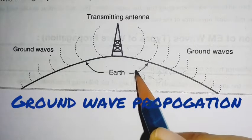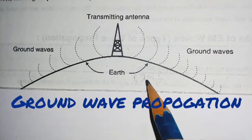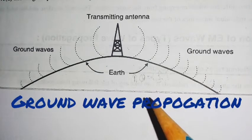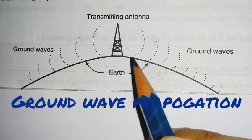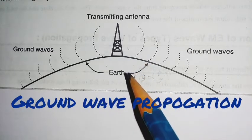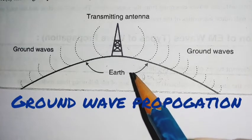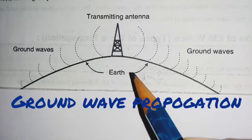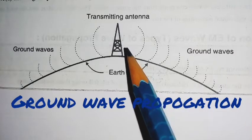The advantage of ground wave propagation is that rain and any other environmental conditions cannot affect transmission too much.